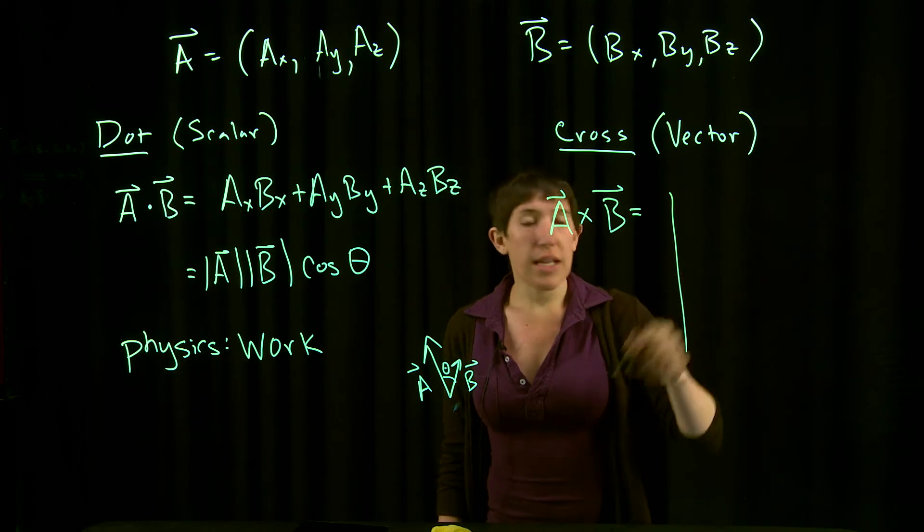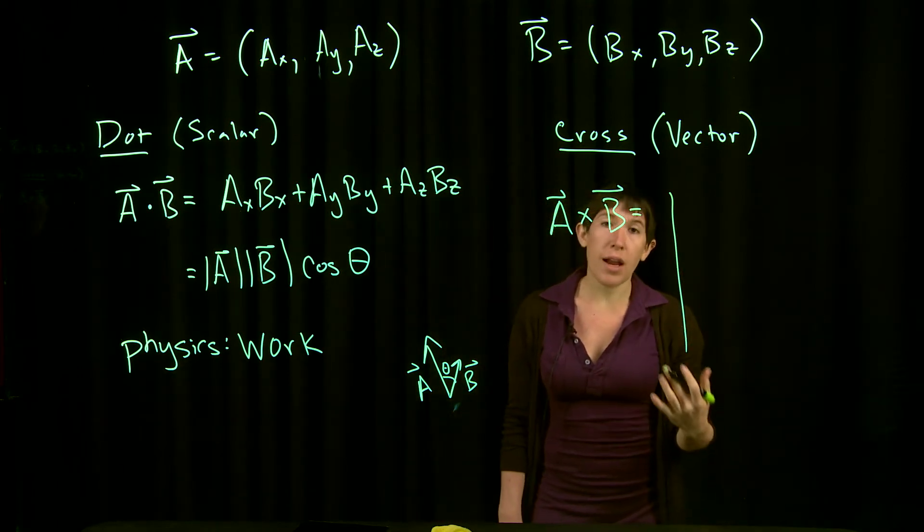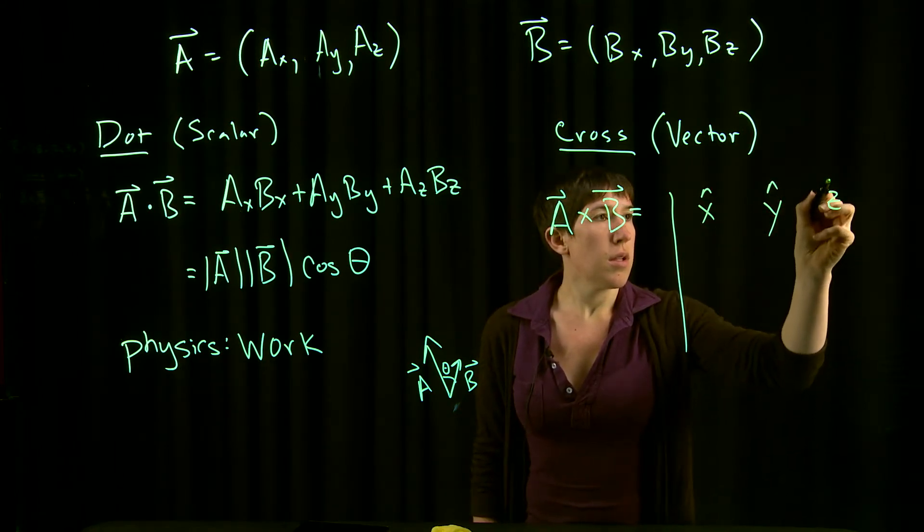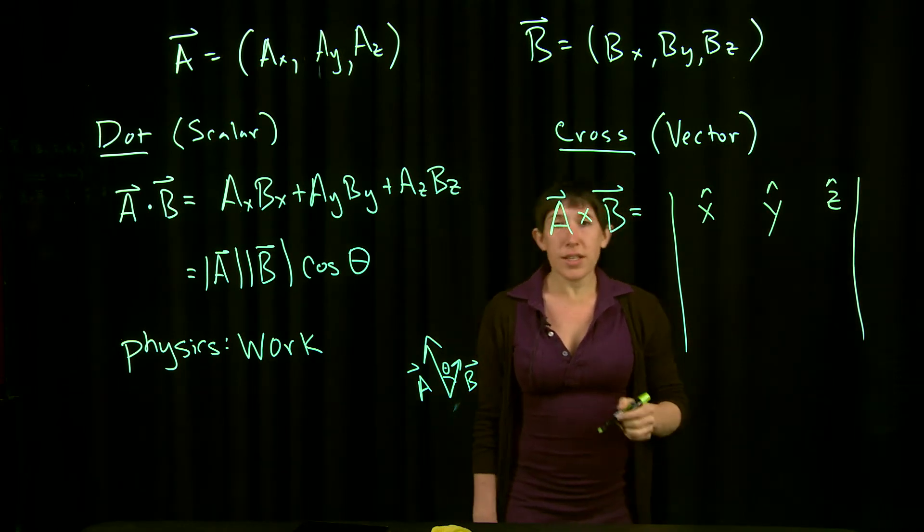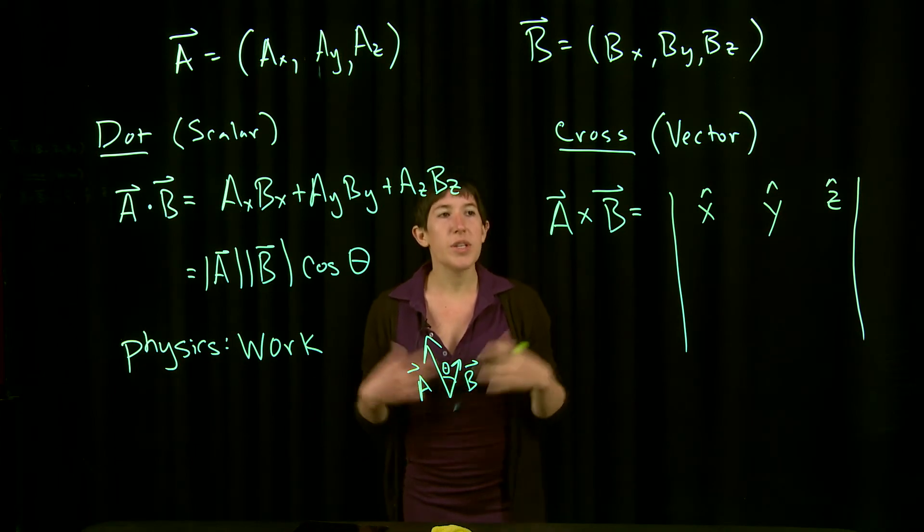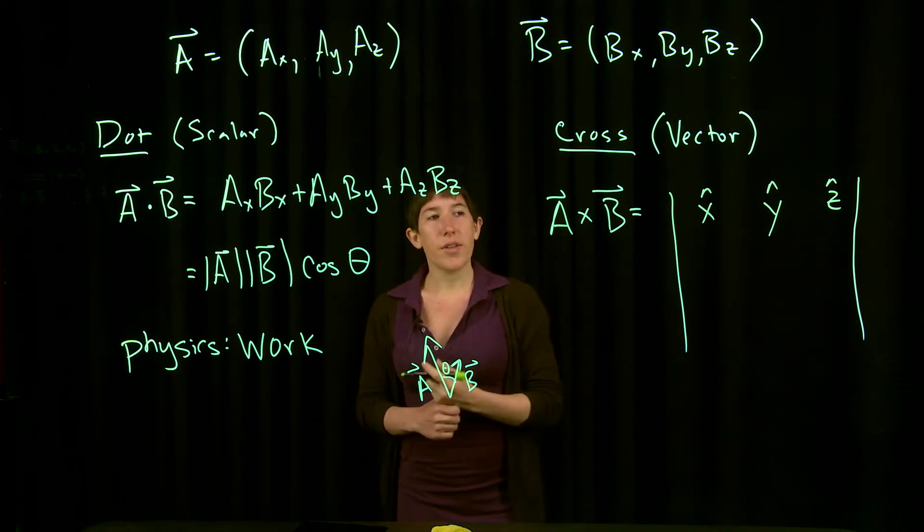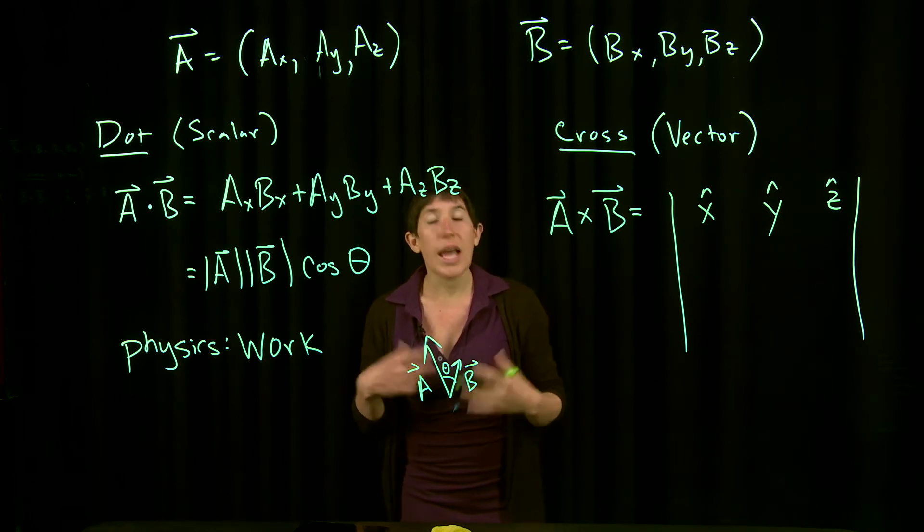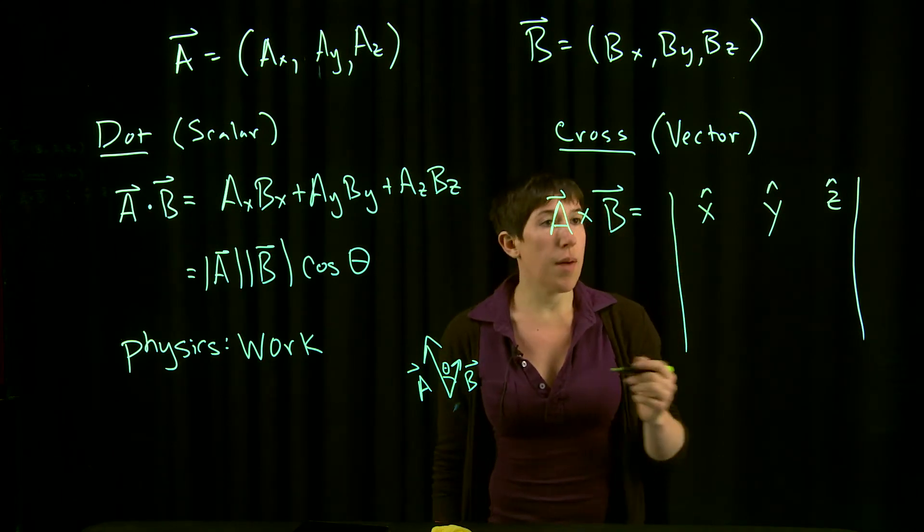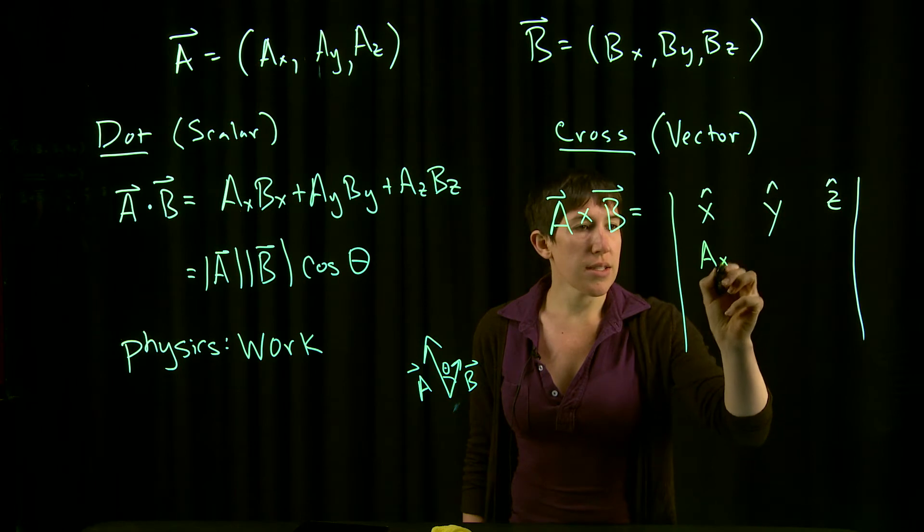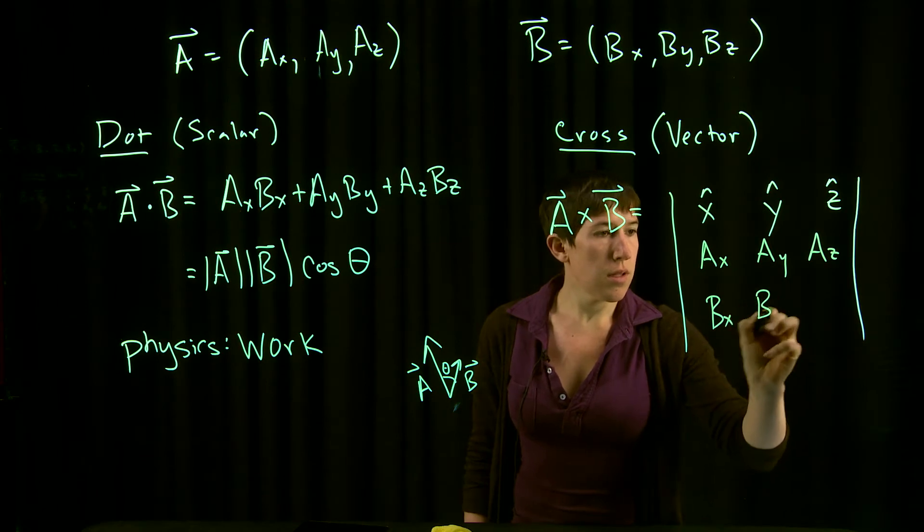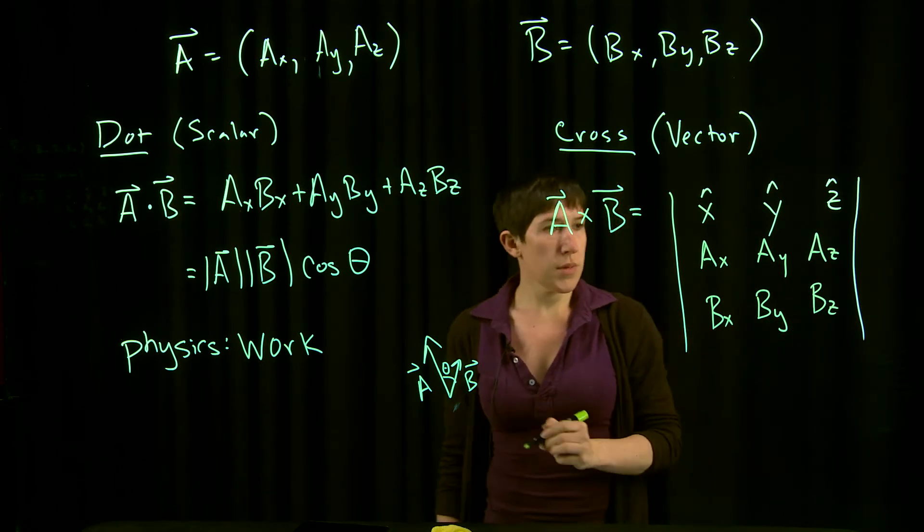Again, we have a couple different ways of computing this. The first is most useful if you're given the components. The way I remember how to do it is using something called the determinant, which you may or may not have learned before. It's actually not that important—you could just remember the formula. Using the determinant is just a handy way of remembering the formula because this is a little more complicated than the dot product.